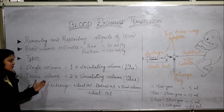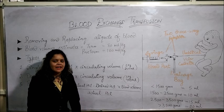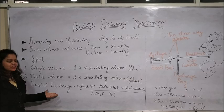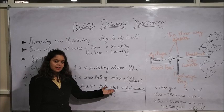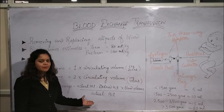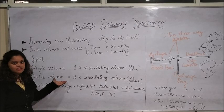In double volume exchange transfusion, we give 2 times the circulating volume — blood is exchanged twice. For the same example of a 3 kg baby, the volume will be 480 ml. Partial exchange is done in case of polycythemia, using the formula: (actual hematocrit minus desired hematocrit) multiplied by blood volume in ml/kg, divided by the actual hematocrit. In single volume exchange, almost 65% of blood is replaced, and in double volume exchange, almost 85% of blood is exchanged.